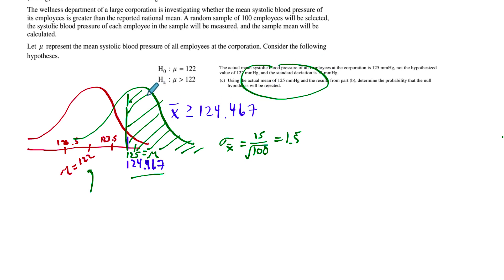We need to find the probability that x-bar will be 124.467 or greater using the actual mean here. Looking at our curve, it should be a little bit more than 50%, right, because it's on the left of the 125. So in my calculator, I'm going to do normal CDF, lower bound 124.467, the upper bound's infinity because we're going out to the right. Mu is going to be equal to 125 and sigma equals 1.5.